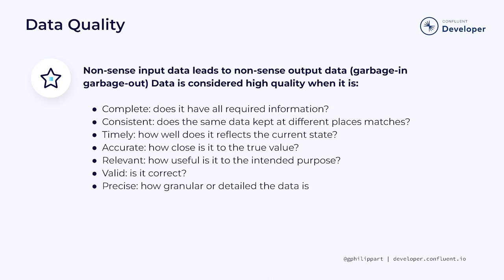Precision measures how granular or detailed the data is. Let's take a timestamp — sometimes it's expressed in seconds, milliseconds, or nanoseconds since 1970. When it's expressed in seconds, it might not be precise enough for some use cases, for example for sensor data.